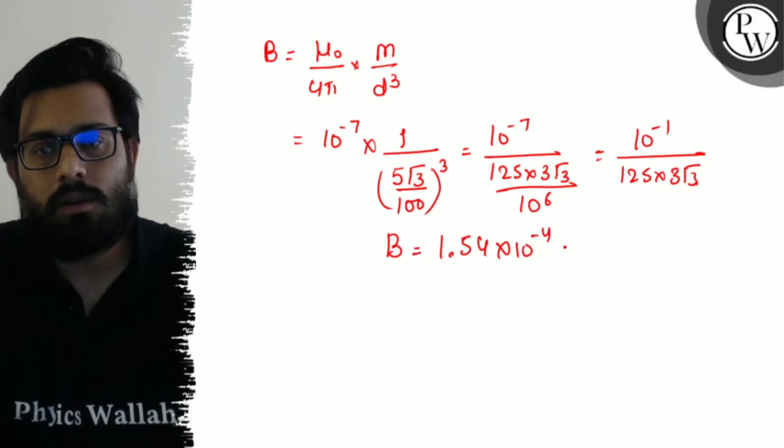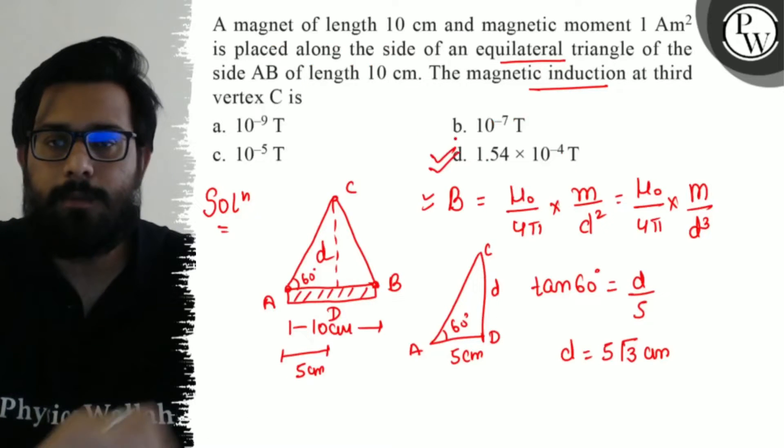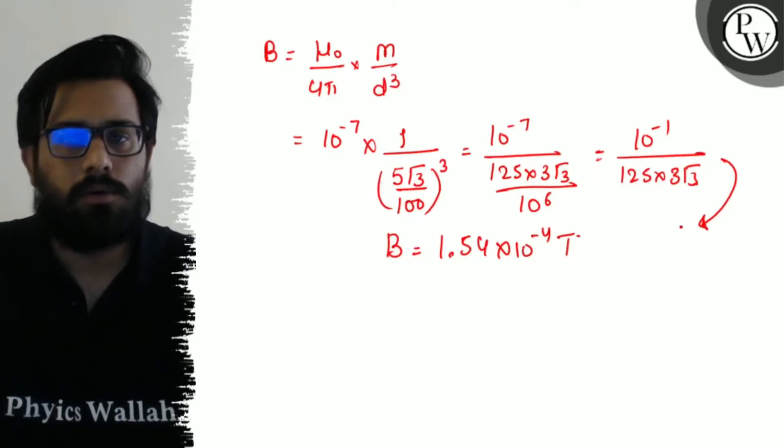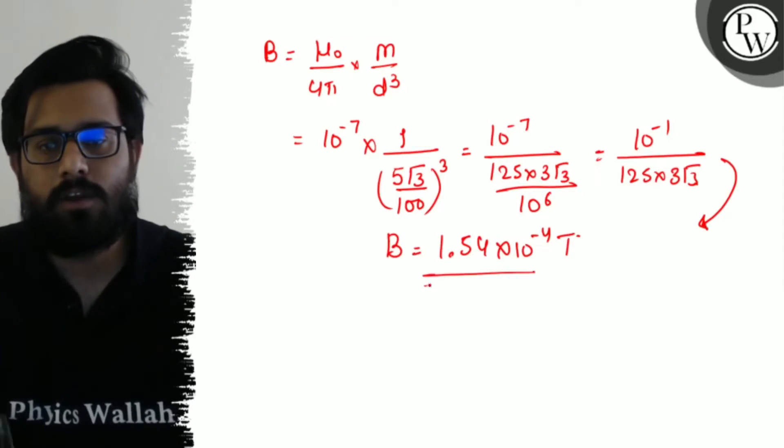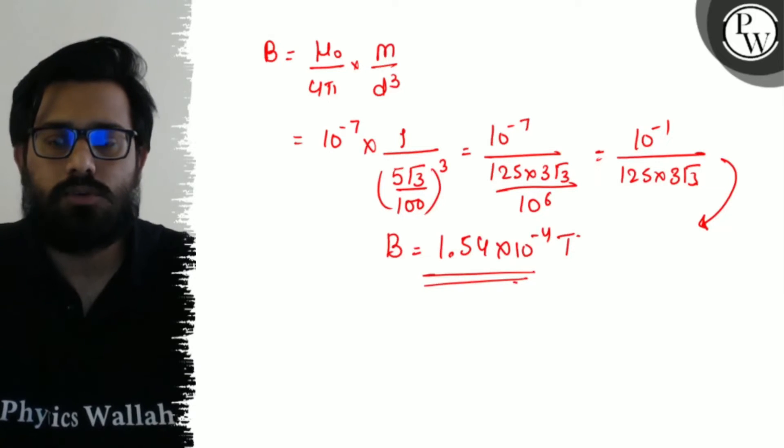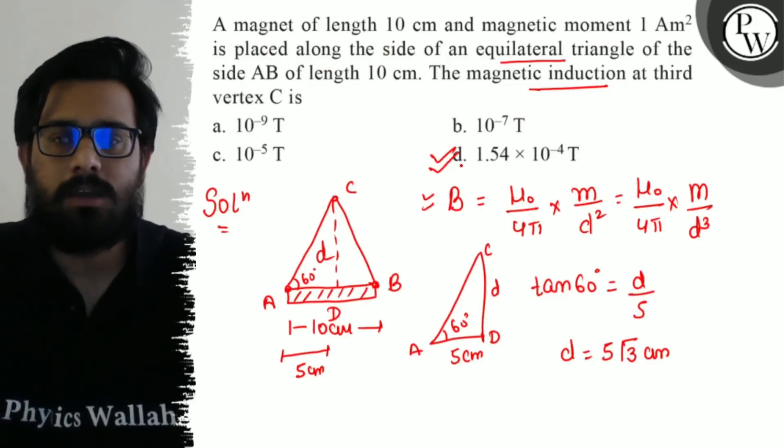Minus 1 upon 125 into 3 root 3. Simplify this and you will get a value of 1.54 into 10 to the power minus 4 tesla. So it's all about the calculation now and when you solve this part you will get the value 1.54 into 10 to the power minus 4 tesla which is D option. So your D is absolutely the correct option and I hope you got the concept of this question. All the very best.